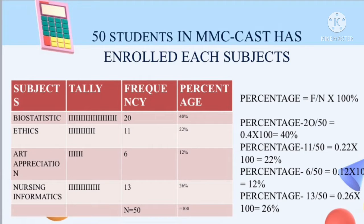Make sure you do the tally of the given data. Now since we are talking about pie charts, we should get the percentage. When constructing a pie chart, we need the percentage, and the formula is f over N times 100%. We should remember that the total percentage is always 100%. Starting with the first frequency: 20 divided by 50 equals 0.4, times 100% equals 40%. To interpret: out of 50 students, 40% enrolled in biostatistics.